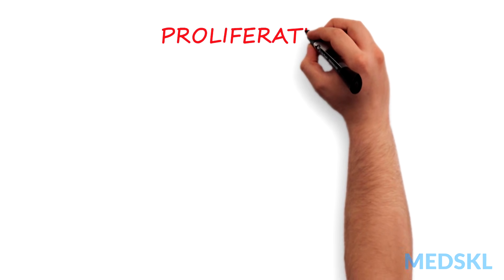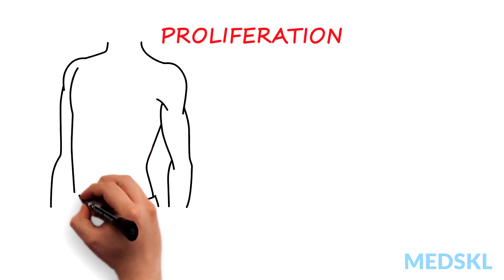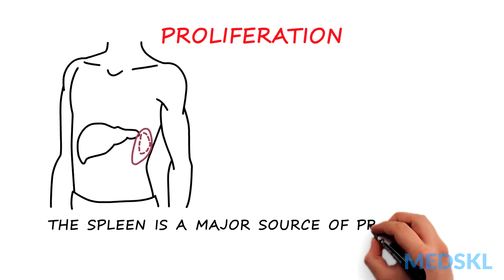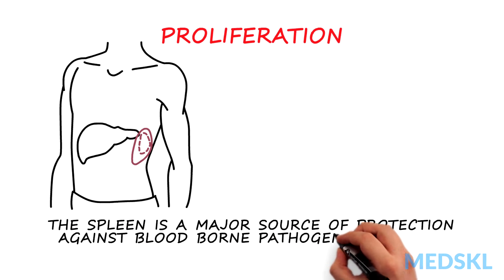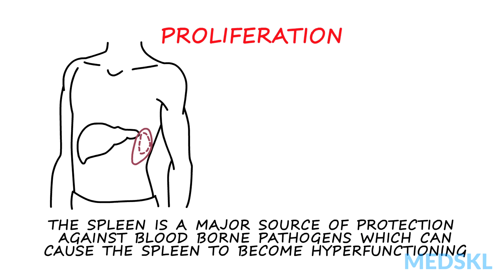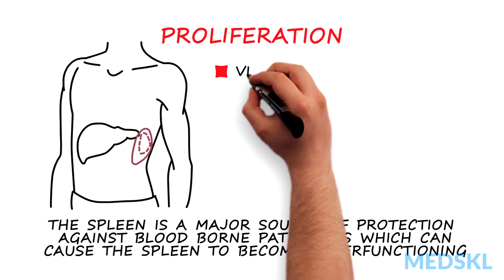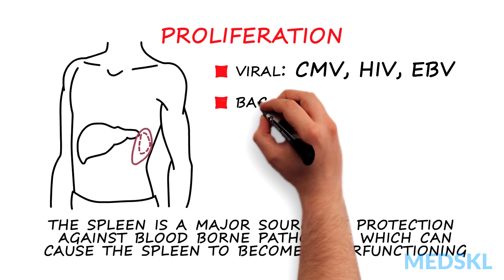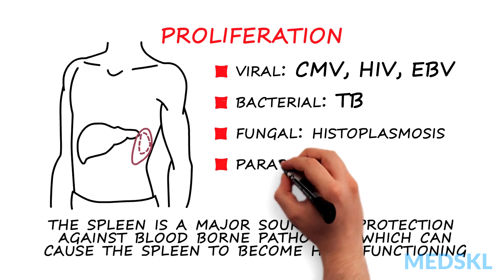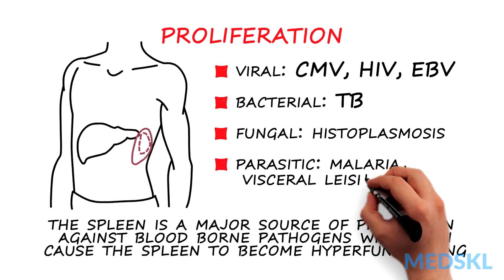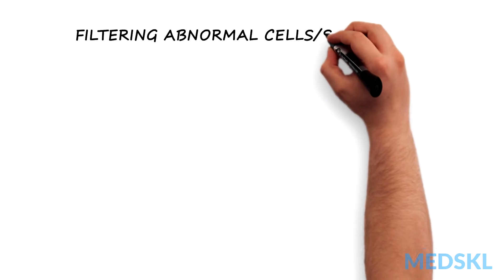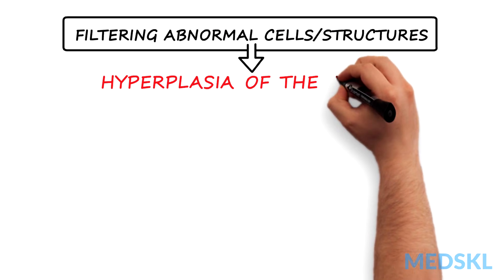That brings us to proliferation. The spleen is a lymphatic organ which, instead of filtering lymph, filters blood. In doing so, it is a major source of protection against bloodborne pathogens as well as other blood abnormalities, which can cause the spleen to become hyperfunctioning. This can be the result of acute infections, which can be viral — CMV, HIV, EBV — bacterial TB, fungal histoplasmosis, as well as parasitic malaria and visceral leishmaniasis. Filtering the blood of abnormal cells and structures can cause hyperplasia of the spleen.